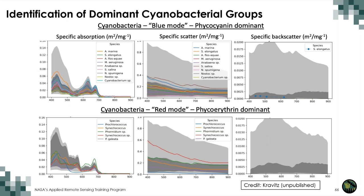The spectral library created by Dr. Kravitz covers two specific types of cyanobacteria — blue-type and red-type — depending on dominant pigment composition: phycocyanin or phycoerythrin. Phycocyanin-dominated cyanobacteria have a characteristic peak absorption near 620 nanometers, while the red-type, dominated by phycoerythrin, have distinct absorption peaks in the blue-green range.